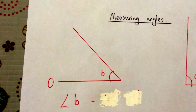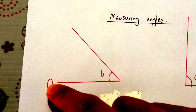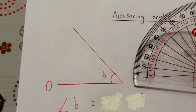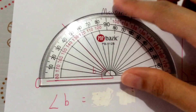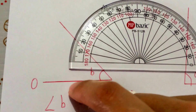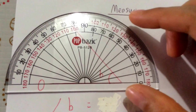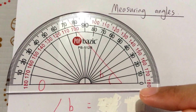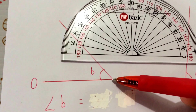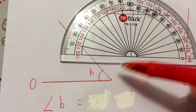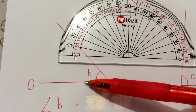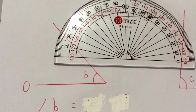Now, before I use my protractor to measure my angle, I'm going to write down 0 over here for this line. You will see why I write 0 here later. Two things you need to take note of when you put the protractor on your angle to measure. Number one, this black line here must be on this red line. Number two, this T point here must be exactly at this meeting point. This line must be on this line, and this point must be on this point. So two things.